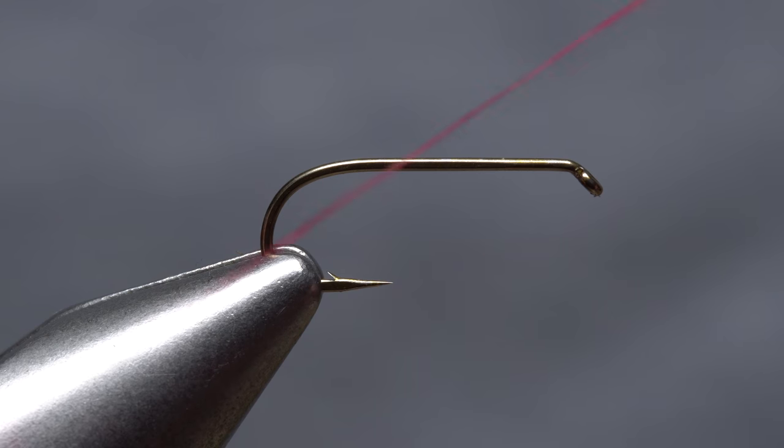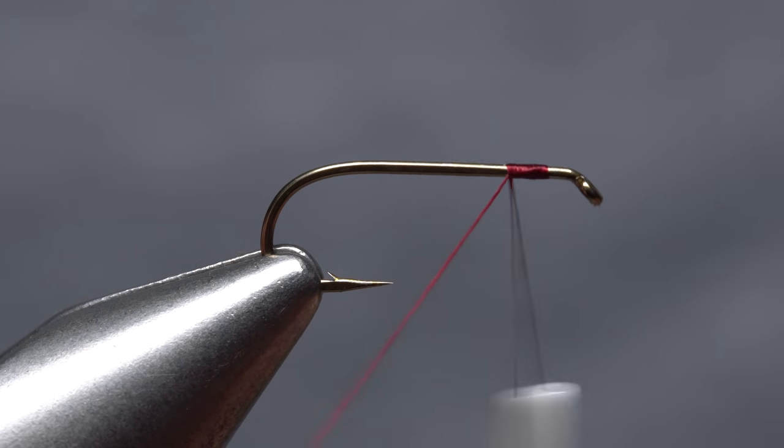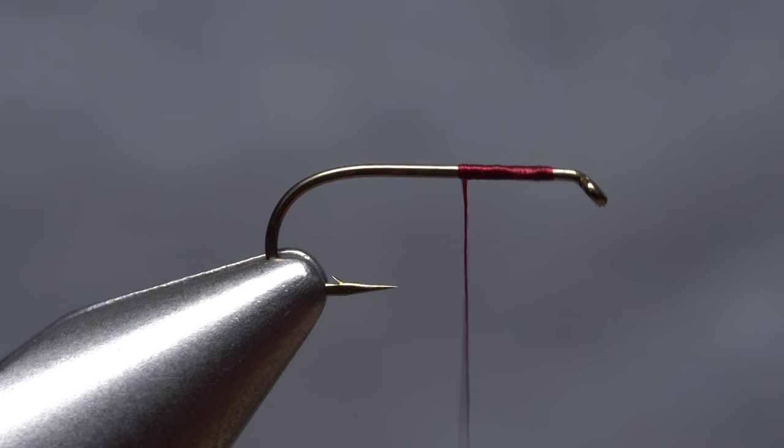After loading your bobbin, get the thread started on the hook shank an eye length behind the eye and take a few wraps rearward before snipping off the tag. Keep taking thread wraps rearward until your thread hangs at about the midpoint of the shank.